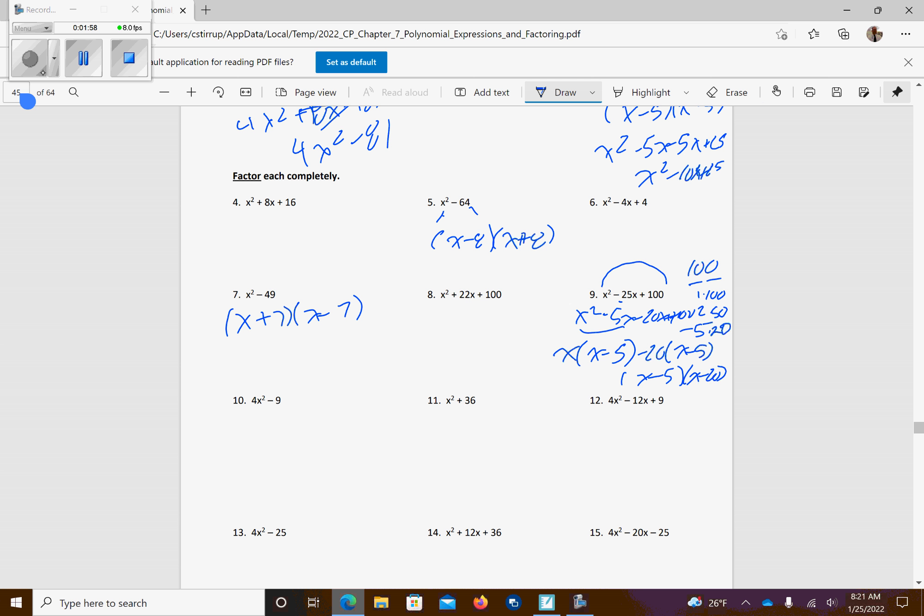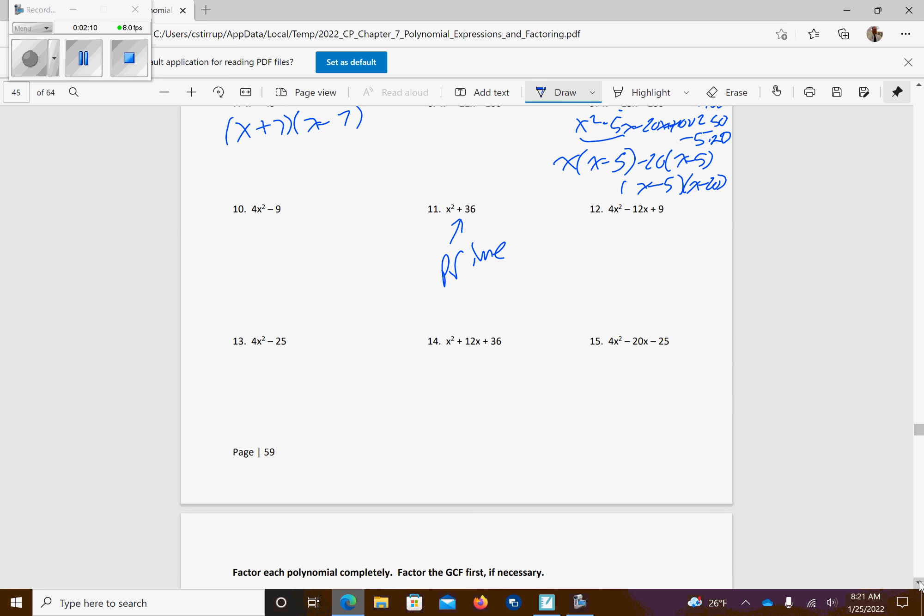Number 11, this looks like a difference of two squares, but that is a plus sign, so this is prime. It will not factor out, so you can just be aware of that, and that will definitely be something you'll see on a quiz.